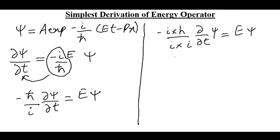This iota multiplied by iota will be iota square which is minus 1. We have the following form: iota h bar divided by iota square which is minus 1, and partial over partial t of psi equals E psi.